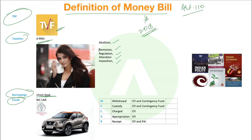Coming to the next one — Borrowings: any borrowings made by the Union Government of India are also a part of the money bill. Then coming to the last one, which is Funds. Funds has another mnemonic: World Cup car — W C car. W stands for Withdrawal, C stands for Custody, the next C stands for Charged, A stands for Appropriation, and R stands for Receipt.